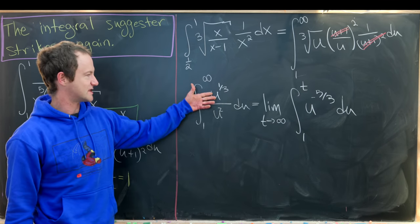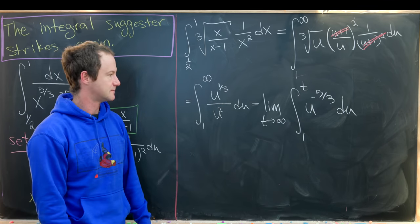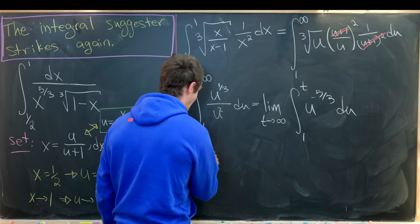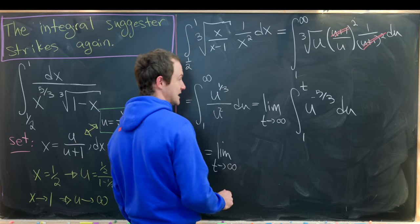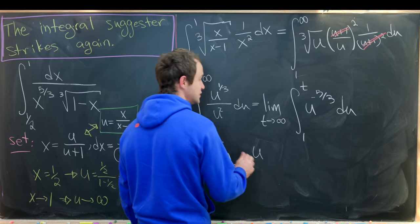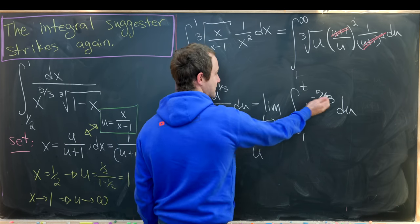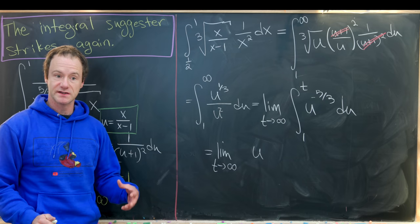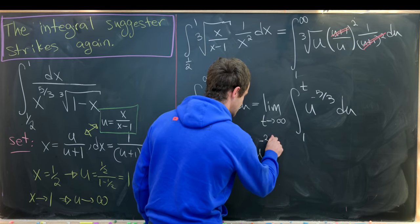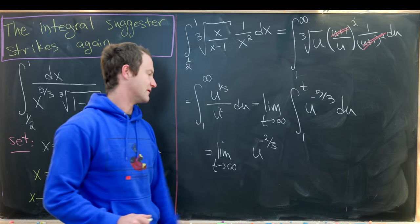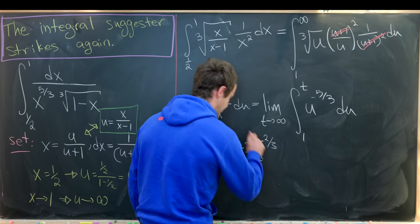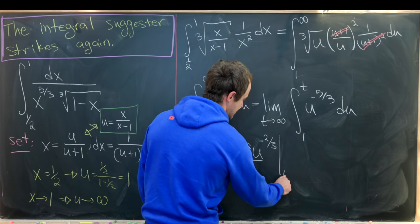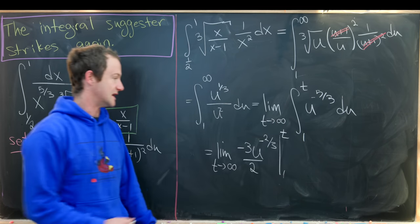Again, that's just a simplification of this quotient. Now applying the power rule, I have this is the limit as t goes to infinity of u to the, let's see, it's going to be minus 5 thirds plus 3 thirds. So that'll be minus 2 thirds. And then we need to divide by this new exponent. That's the same thing as multiplying by 3 halves. Then we'll evaluate this at 1 and t.